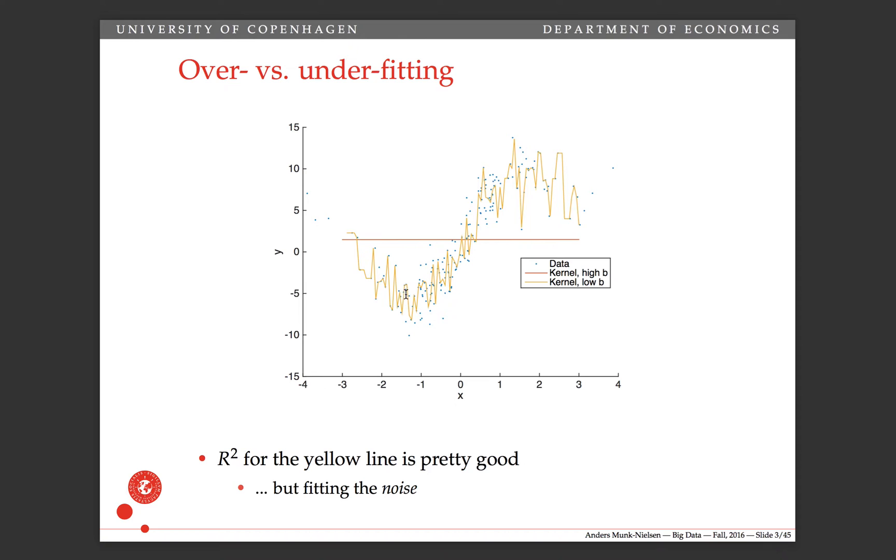And the R-squared for the yellow line might be very nice. And one of the problems with that is that what R-squared or the in-sample squared error is doing is it's just fitting all of the data. It's telling us that you fit the data really well, but maybe you're just overfitting the in-sample data. So you're fitting the noise and not the signal.